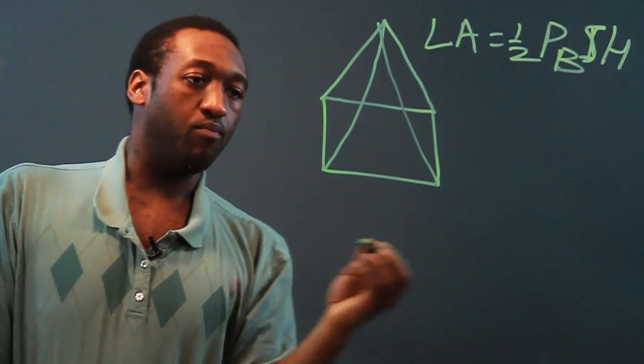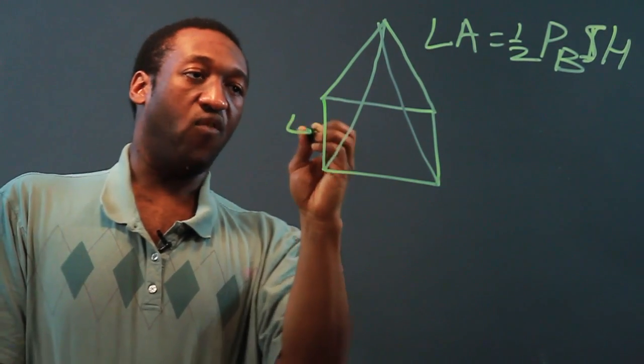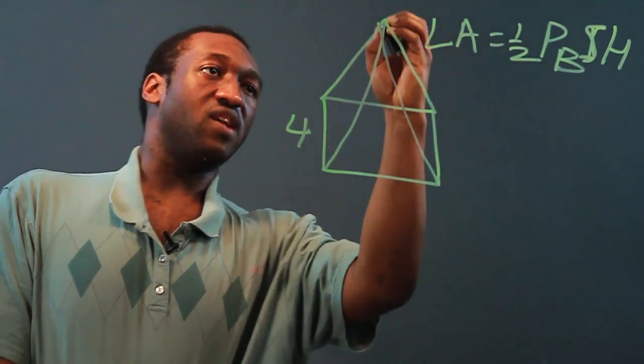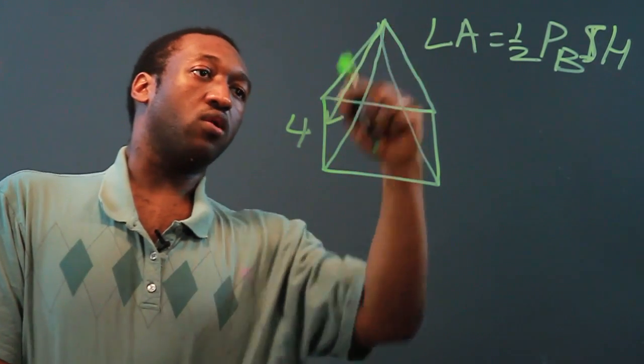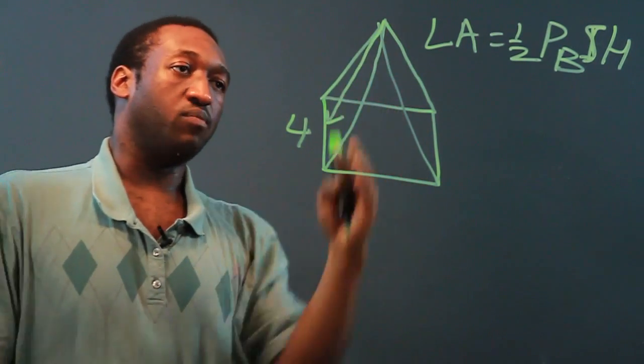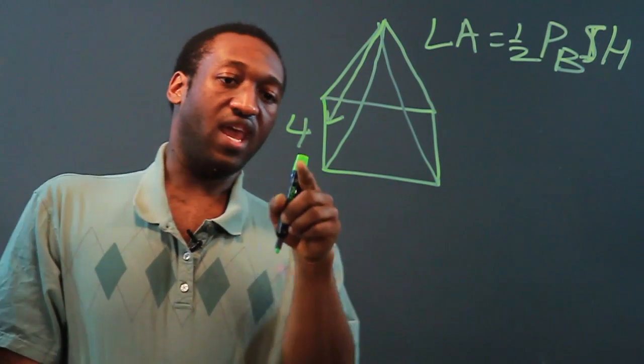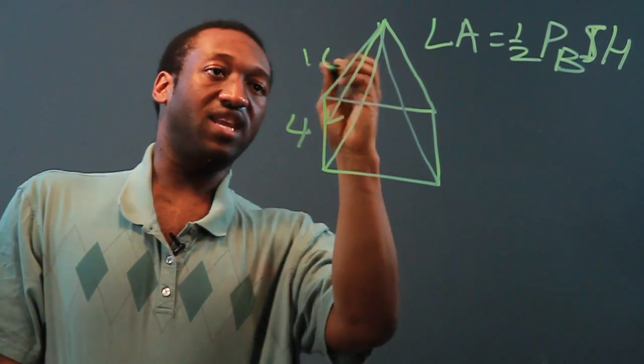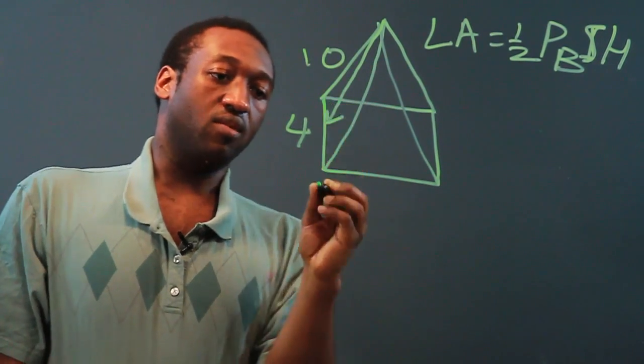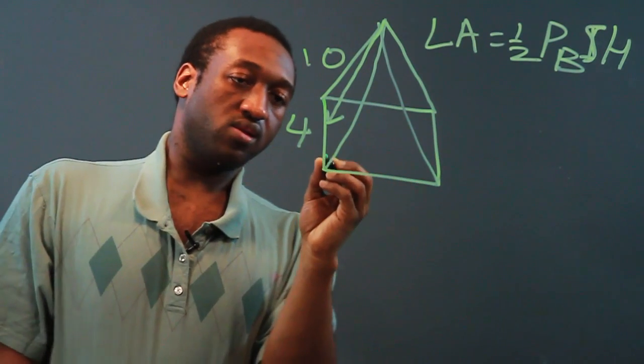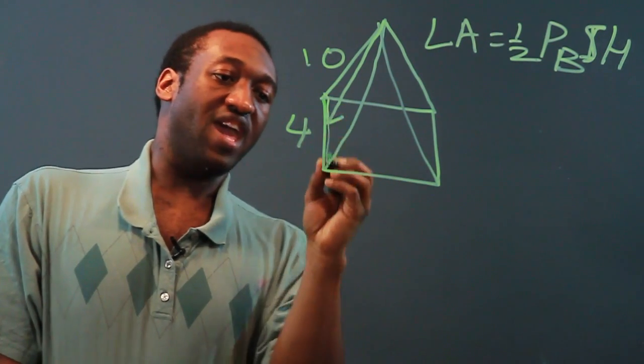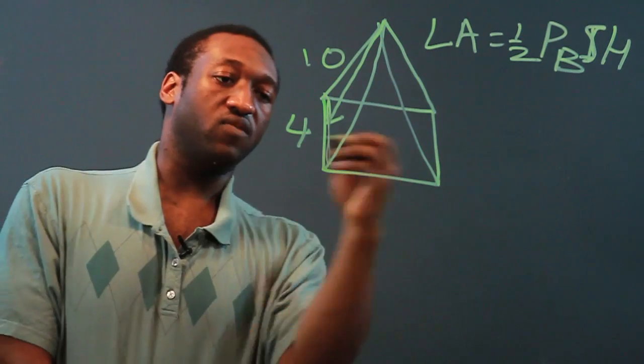Now the perimeter of the base, let's say we have four, and let's say the slant height, which is really just the height that goes along one of the edges of the pyramid going up, let's say we have a slant height of 10 and the base has an edge of four.